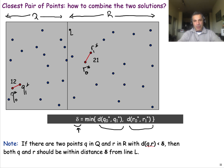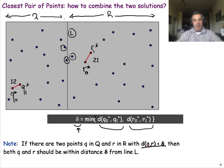To answer this question, let's form a vertical line L at the x-coordinate of the rightmost point in Q. If you have a pair of points such that one is in Q and the other is in R, and the distance between them is smaller than delta, then both points must be within delta from this line L. It cannot be that the distance between two such points is smaller than delta if at least one of them is more than delta away from the vertical line L.